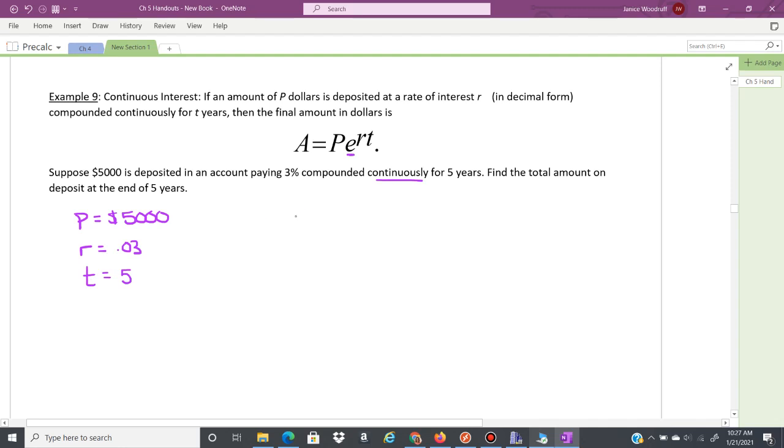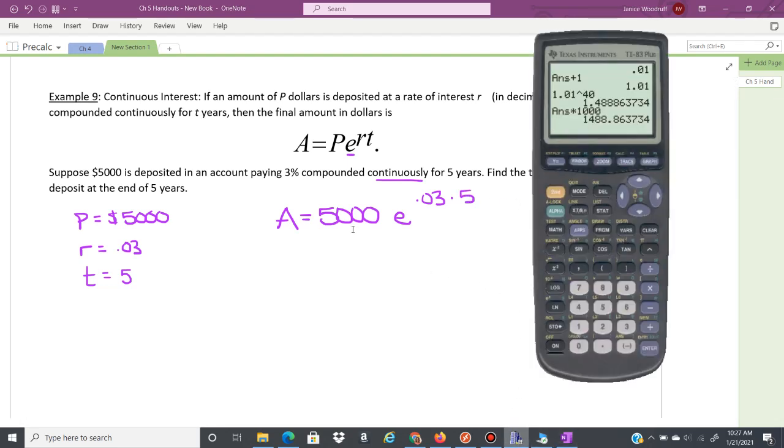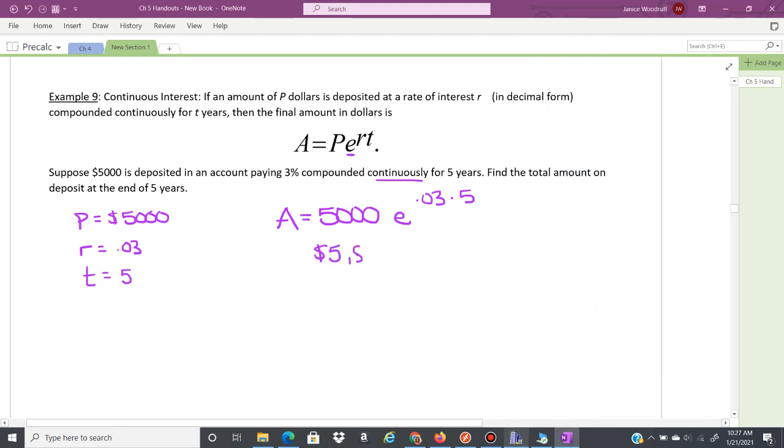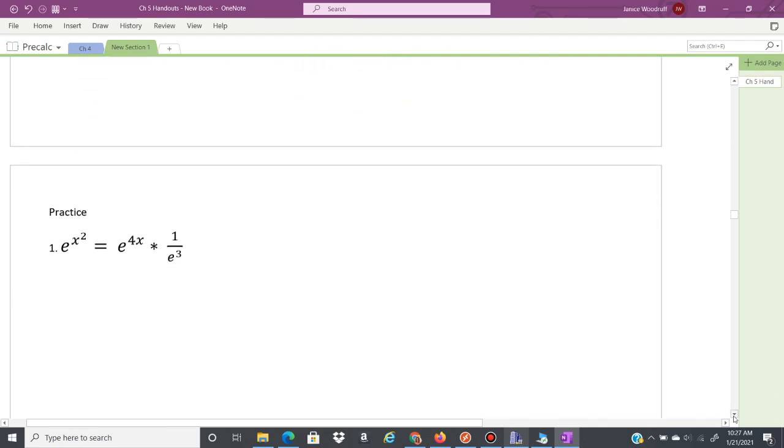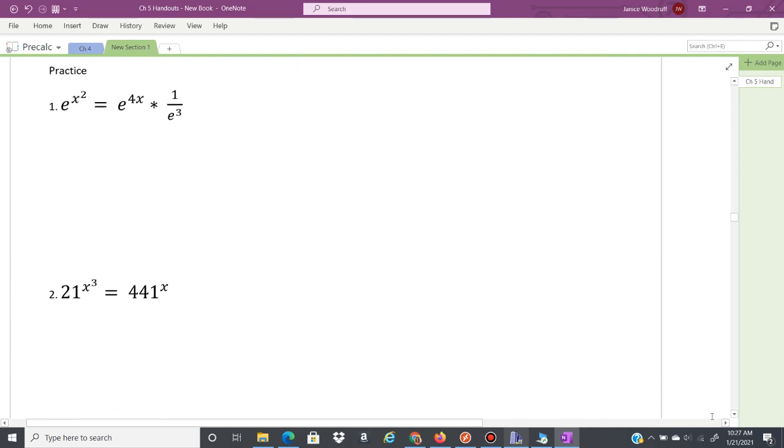So if we plug this into this formula here, you're going to have 5,000, and then you have e to the 0.03 times 5. And you can go ahead and put this in your calculator, just like that if you'd like. So you have 5,000 to get your e second, ln to give you that e. Then you have 0.03 times 5, close the parentheses, and that'll give you $5,809.17. So let's go ahead and you guys can pause this video and work some of these practice problems, and when you're ready, just press play again.